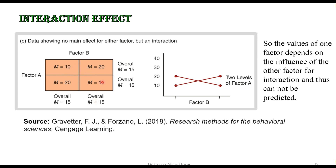Now let's look at an example with interaction. If I hide the fourth cell: the mean changes from 10 to 20 in the first row, an increase of 10. So if the third cell is 20, I predict 30 for the fourth cell — but the actual value is 10, which is different from my prediction. Therefore there is an interaction effect. Using the second method: 10 minus 20 gives minus 10 in the first row, but 20 minus 10 gives plus 10 in the second row. The direction is different, confirming interaction.